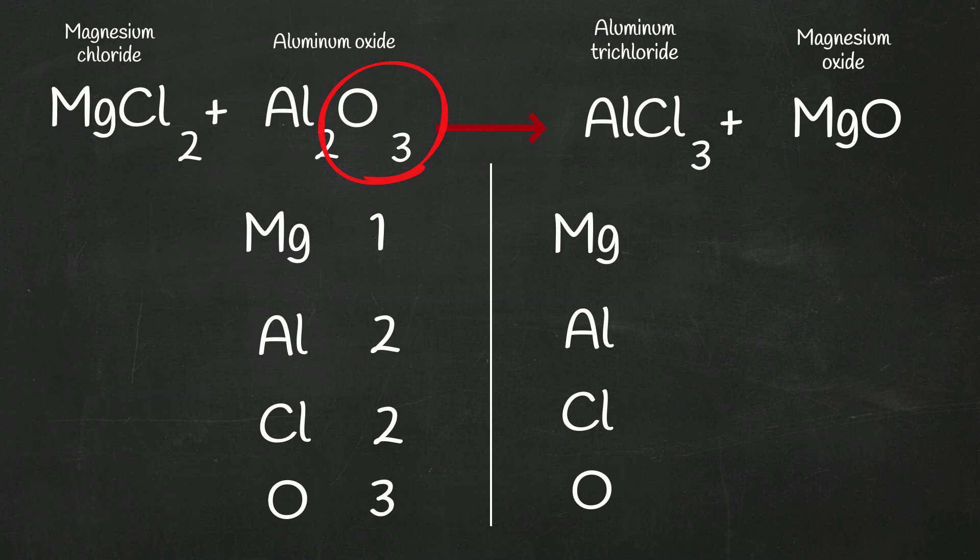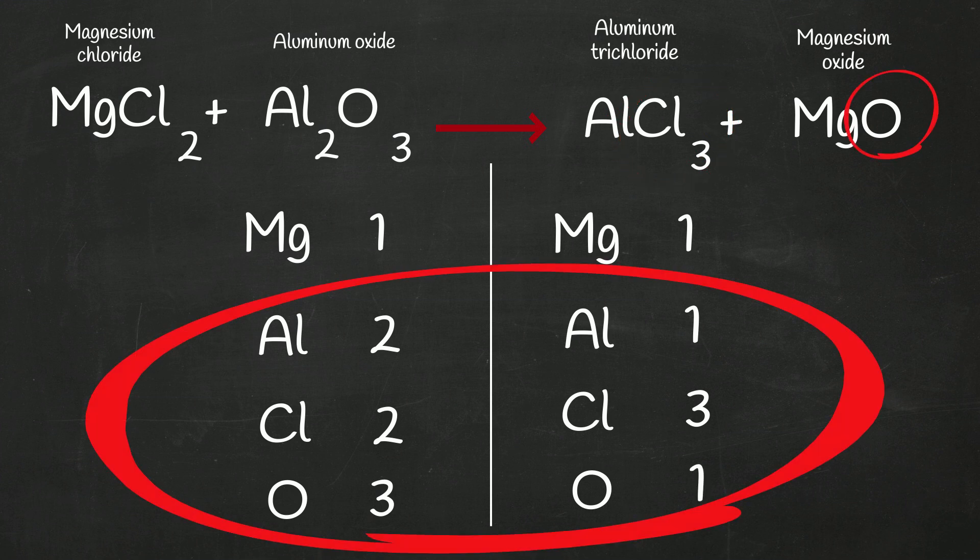And then on the right, we have one magnesium, one aluminum, three chlorines, and one oxygen. So as you can tell, they are not balanced.